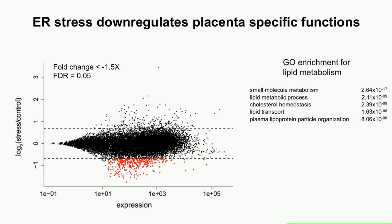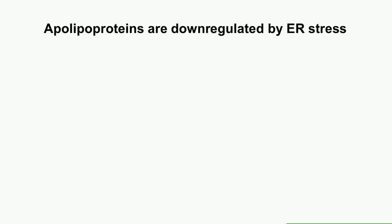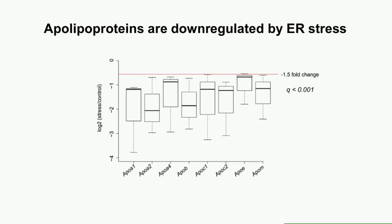Even more striking, when we looked at where these gene products function, they are enriched in exosomes and vesicles. It seems like we're perturbing exosome or vesicle biogenesis in the placenta by inducing ER stress. As an example, a full third of all apolipoproteins are downregulated almost two-fold or more in the placenta by ER stress — a striking finding that almost a third of this whole gene class is affected.